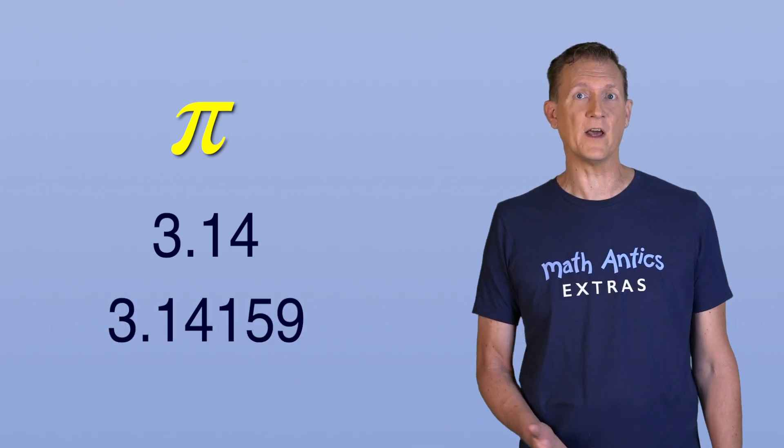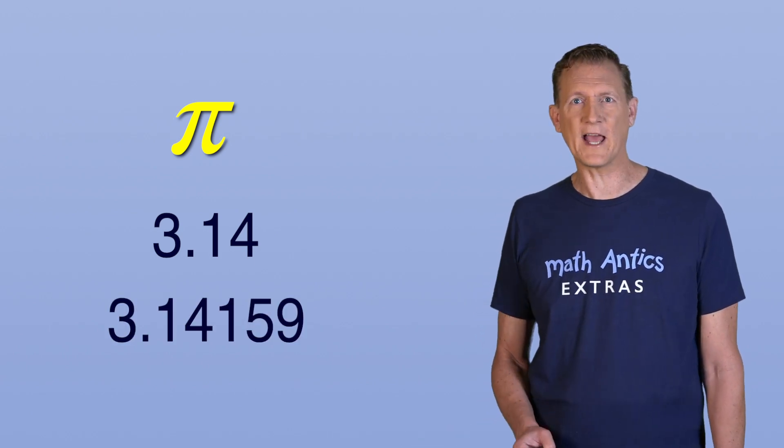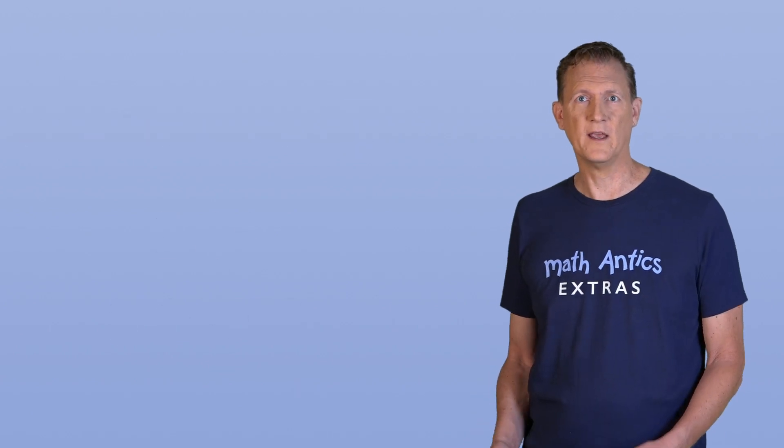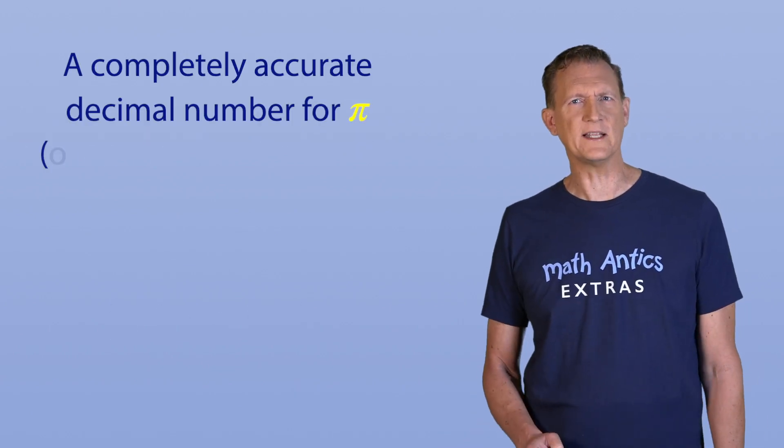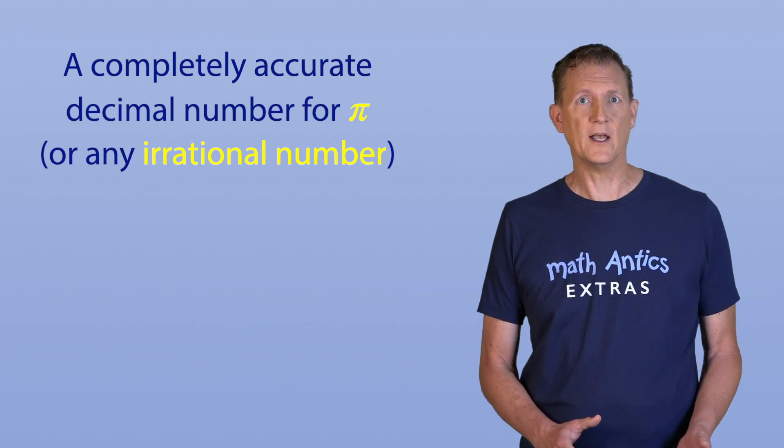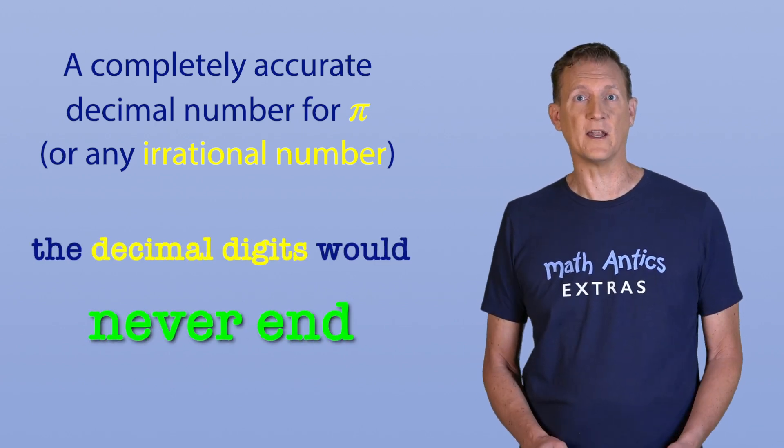And you've probably seen pi written as a decimal number, like 3.14 or 3.14159. But those aren't completely accurate values of pi either. Again, they're approximations. If you tried to write a completely accurate decimal number for pi, or any other irrational number, the decimal digits would never end and won't repeat.